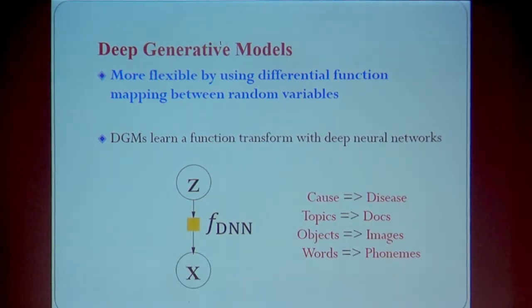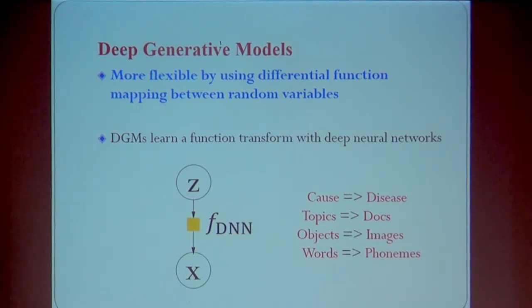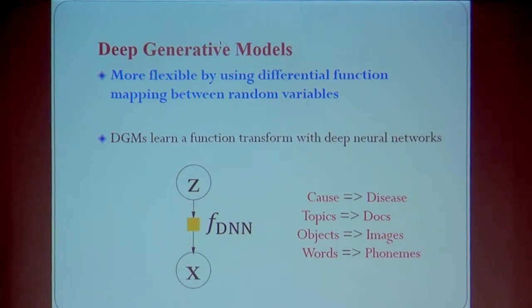Recently, this idea has been generalized. We use deep learning to enrich and to make the Bayesian models more powerful. The basic idea is: we start from a simple variable, for example a uniform or normal variable, then we pass it through a deep network, which defines a function to transform the variable to another one. The transformed variable will have a density function that can be much more complex than the original. So Z is simple, but X can be complex enough to fit our data.